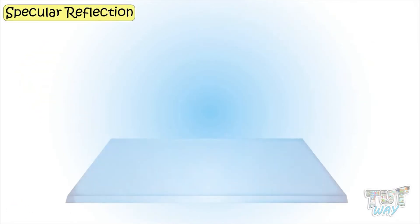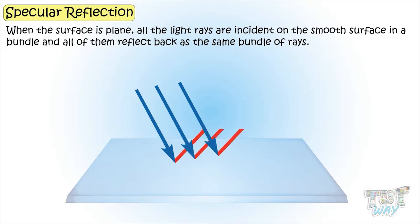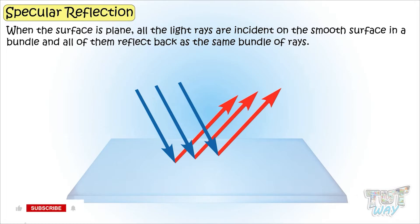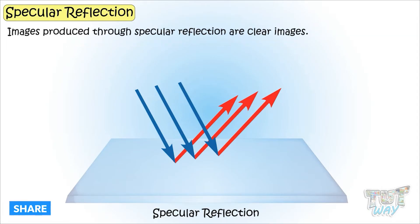When the surface is plain, all the light rays are incident on the smooth surface in a bundle and all of them reflect back as the same bundle of rays. Such reflection off smooth surfaces is called specular reflection.